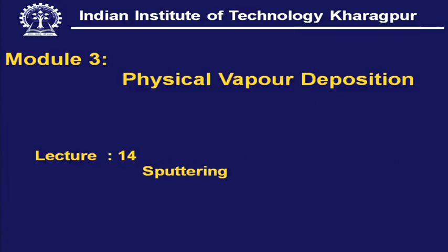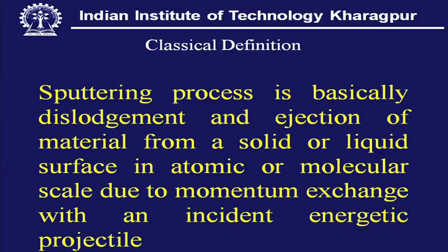This is Physical Vapour Deposition, and today we shall discuss sputtering. Sputtering has a classical definition: it is a process which is basically dislodgement and ejection of material from a solid or liquid surface in atomic or molecular scale due to momentum exchange with an incident energetic projectile.